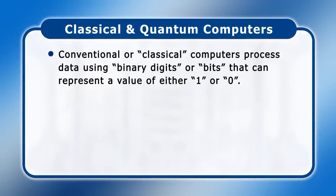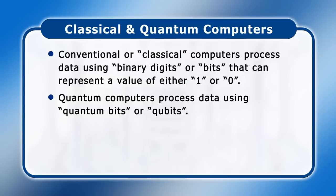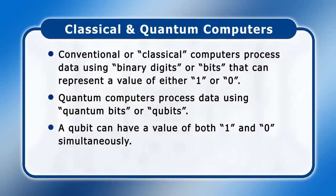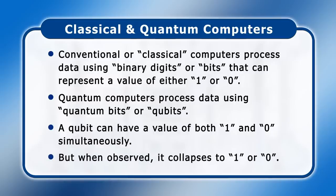Conventional or classical computers process data using binary digits or bits that can represent a value of either one or zero. In contrast, quantum computers process data using quantum bits or qubits. Due to a quantum mechanical phenomenon called superposition, qubits can exist in more than one state at exactly the same point in time. Bizarrely, this means that a qubit can have a value of both one and zero simultaneously. But when a qubit is observed, its state always collapses to a value of either one or zero.